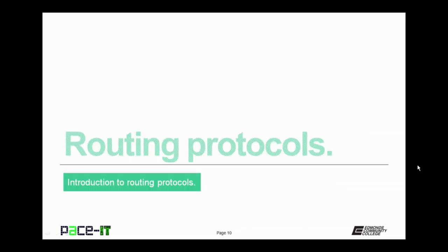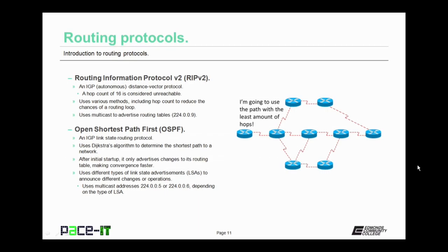Now let's move on to the routing protocols themselves. First up is Routing Information Protocol version 2, RIP v2. RIP is an IGP distance vector protocol. For a route to be placed in the routing table, it can be no more than 15 hops away — a hop count of 16 is considered unreachable. It uses various methods, including the hop count, to reduce the chances of a routing loop occurring.